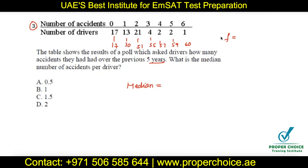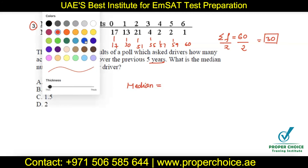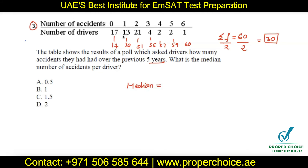To find the median from a frequency table: add all the frequencies — the sum is 60 — then divide by 2, giving 30. Since there are an even number of data points, the median is the average of the 30th and 31st values. Arranging by accidents: the first 17 people had zero accidents, the next 13 had one accident, so the 30th person had one accident.